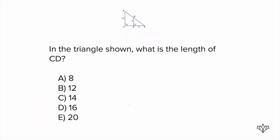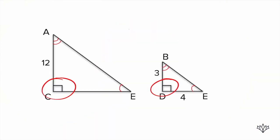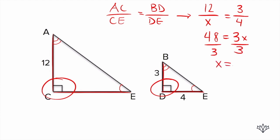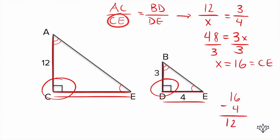The question is asking for the length of CD. Two similar triangles have sides in ratio to each other, so AC over CE equals BD over DE. AC is 12, and BD over DE is 3 over 4. So we have 12 over X equals 3 over 4. Cross-multiplying: 12 times 4 is 48, and 3 times X is 3X. So 48 equals 3X. Divide both sides by 3, and X is 16. That X represents the full length of CE. Since CE is 16 and DE is 4, we do 16 minus 4 to get CD, which is 12 — answer choice B.